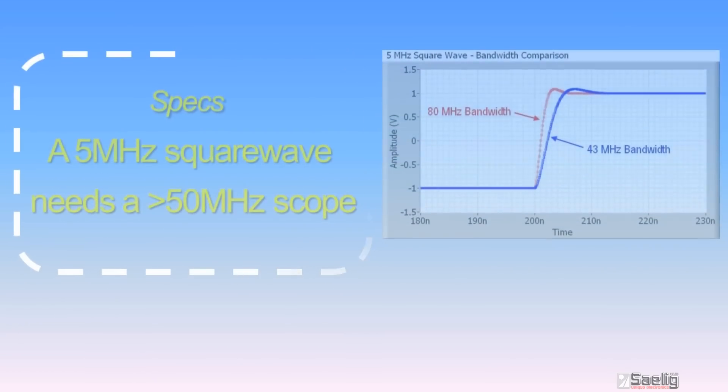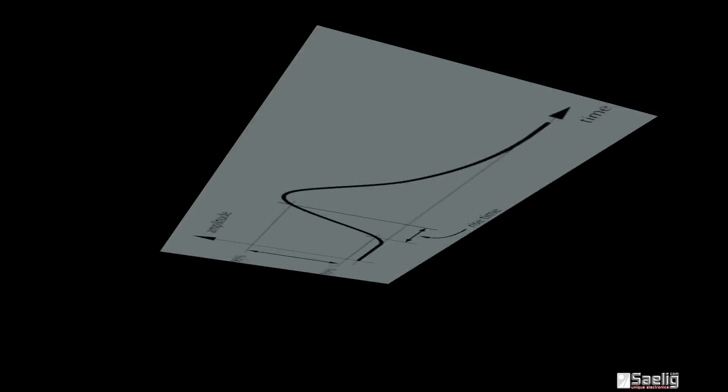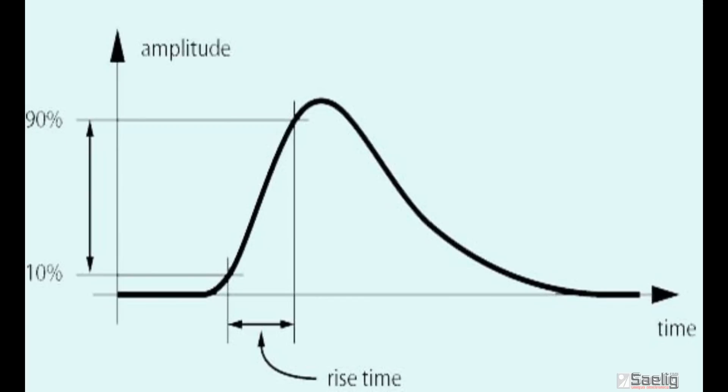As for digital signals, a 5 to 10MHz square wave is about the fastest digital signal that a 100MHz scope will see. A 100MHz scope has about a 3 and a half nanosecond rise time.